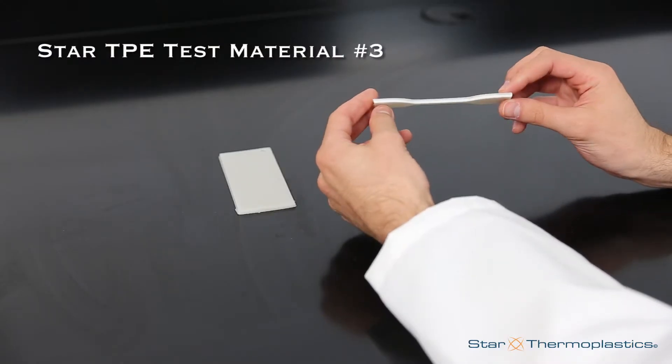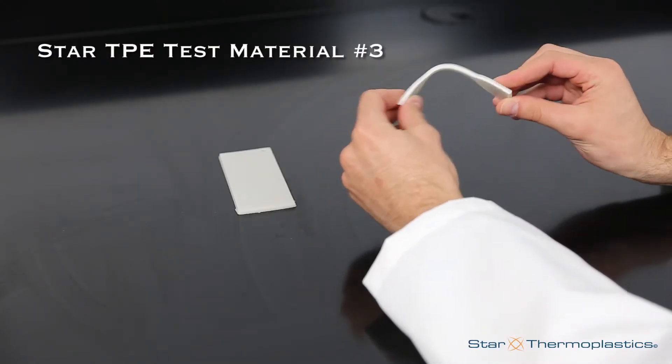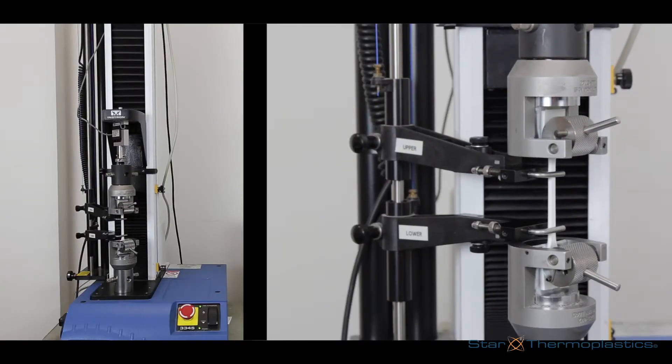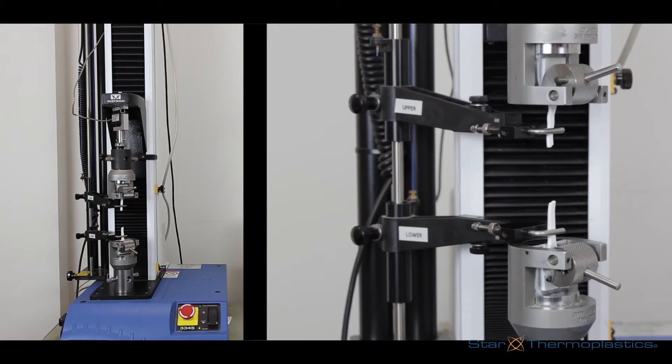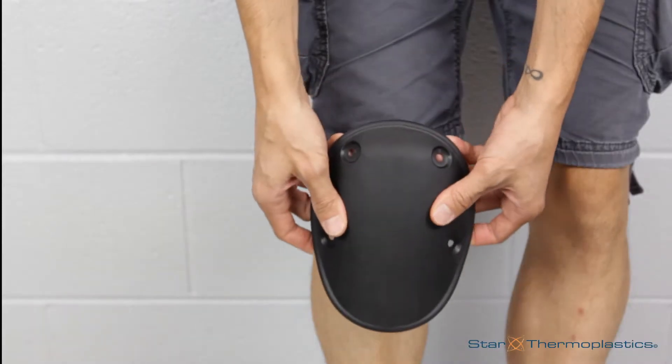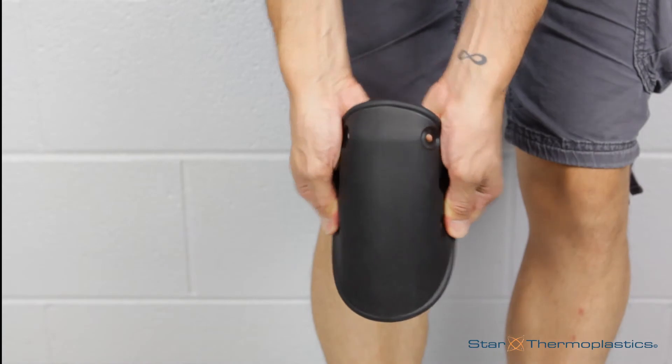And lastly, here's the relatively rigid Star TPE material. It doesn't stretch much, but it has a high tensile strength, meaning it won't break easily either. We've seen these properties work well for applications like knee pads and roof flashing.